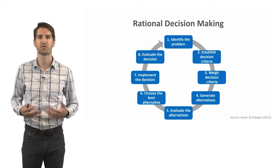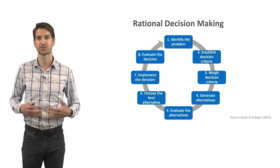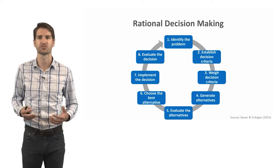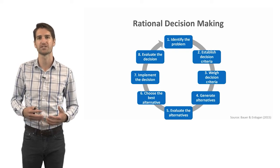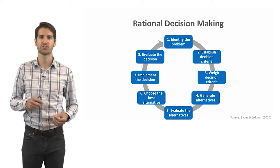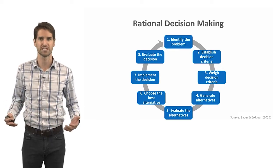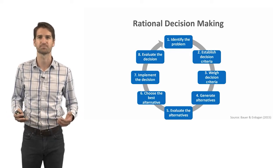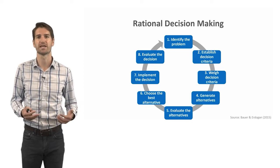Looking at an example of the rational decision making model: first, we identify the problem. After that, we establish decision criteria, which are used to evaluate the different decision alternatives we might generate. We then weigh those criteria by ranking or assigning value to them based on their importance to you or your organization. After that, we generate different decision alternatives—different courses of action we might take—then evaluate those alternatives, choose the best one, implement that decision, and evaluate it subsequently.